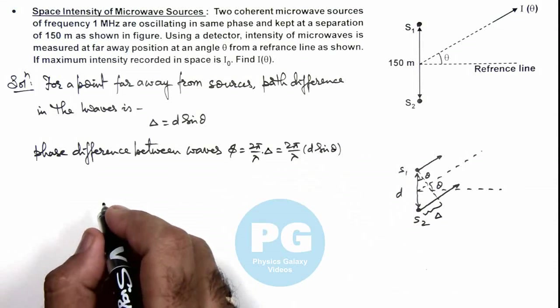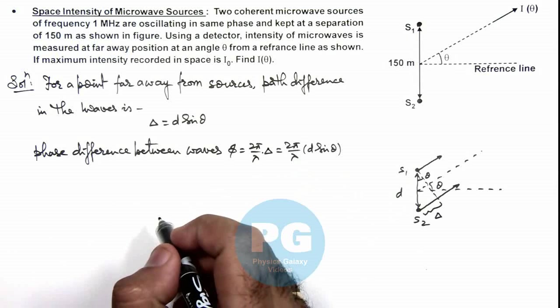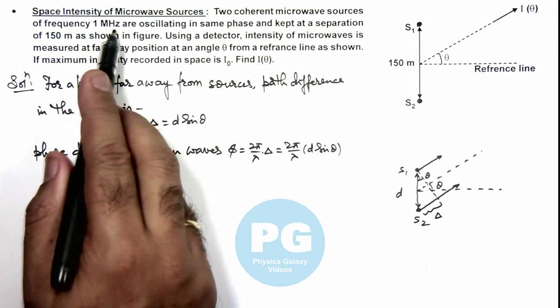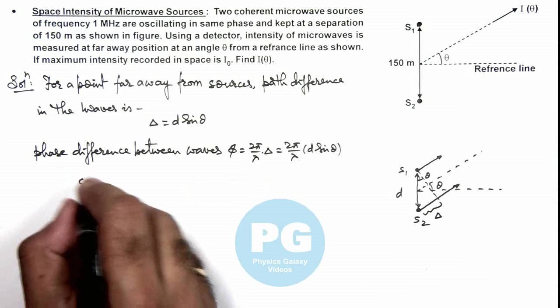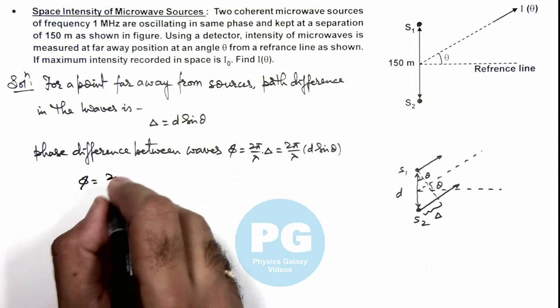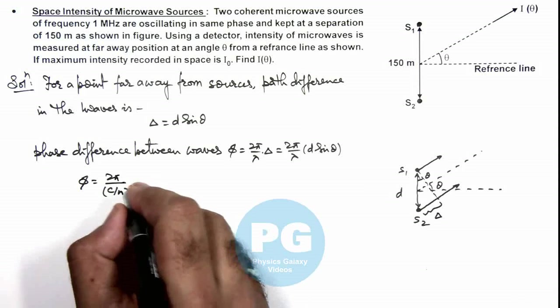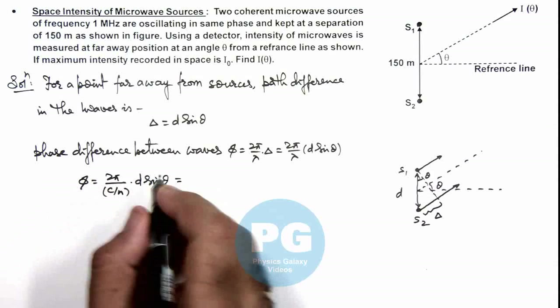In this situation, if we substitute the value of lambda that can be given as c/ν, and the frequency of sources we are given with 10⁶ hertz. So here we can write the phase difference is equal to 2π/(c/ν) multiplied by d sin theta. So this we can numerically calculate.